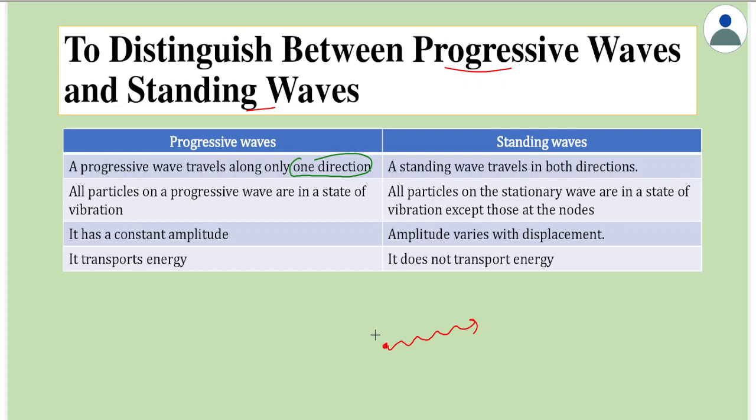While in case of a standing wave, a wave travels in both directions. As seen earlier, standing waves means waves which are confined in a given region. For example.